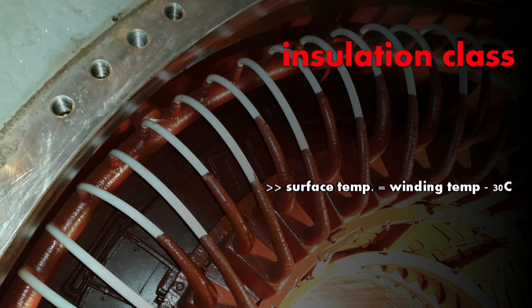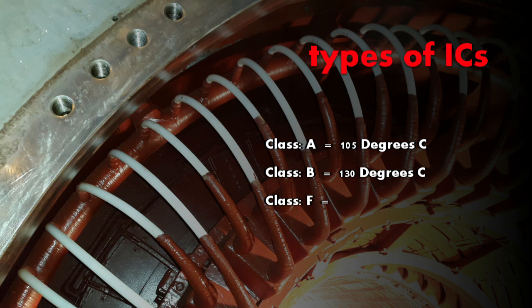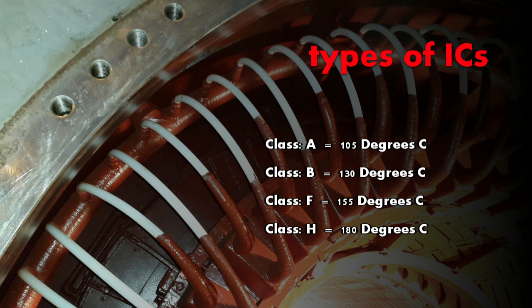Next comes the insulation class. The surface temperature of the motor is typically 30 degrees centigrade lower than its winding temperature. We have 4 different classes of insulation: Class A, Class B, Class F and Class H for motors. For Class A, maximum temperature rating is 105 degrees centigrade. For Class B, it is 130 degrees centigrade. For Class F, it is 155 degrees centigrade and for Class H, it is 180 degrees centigrade.